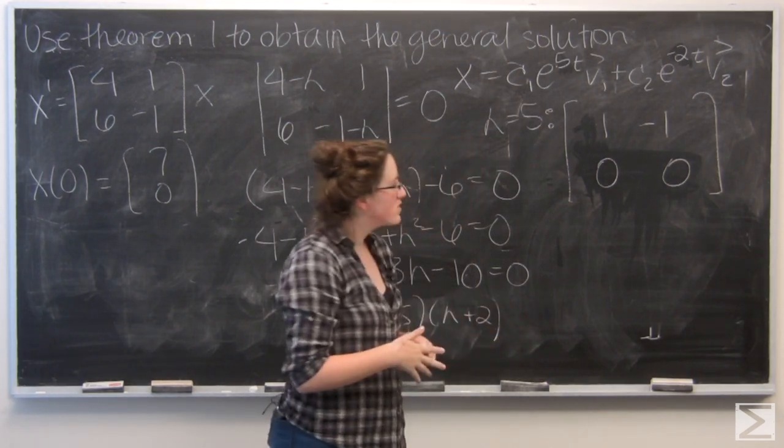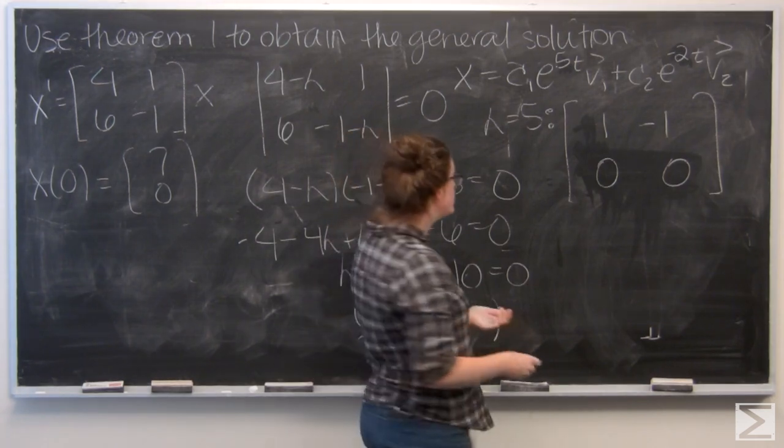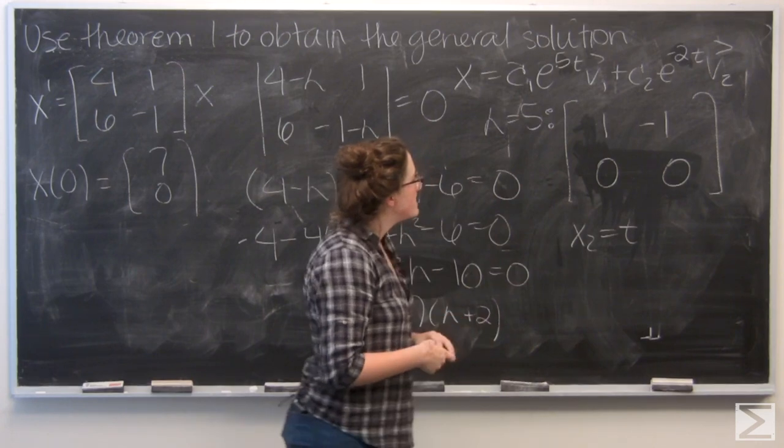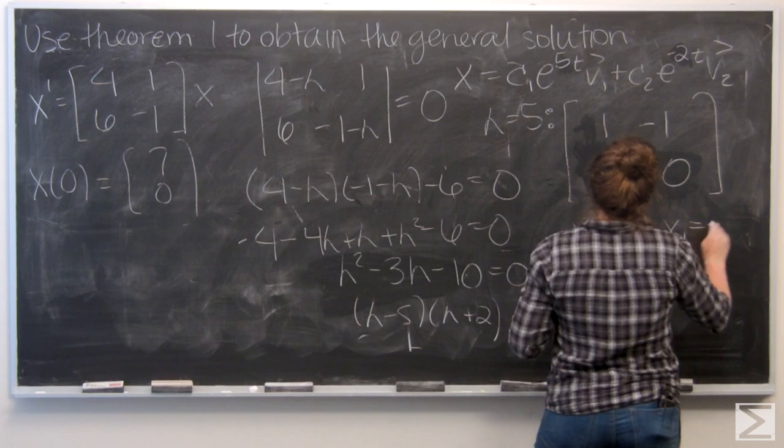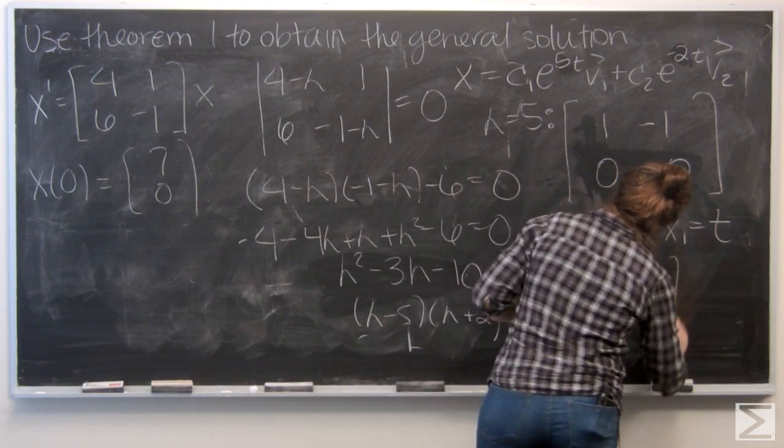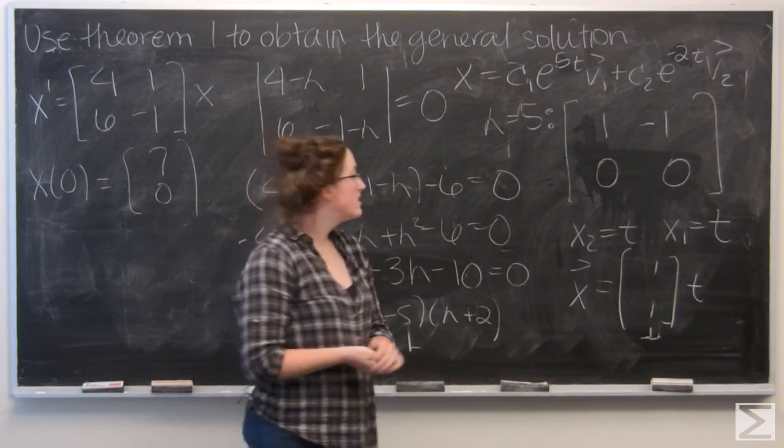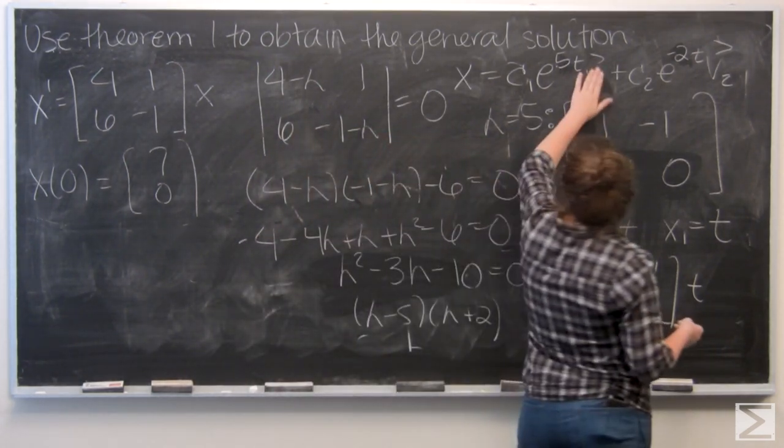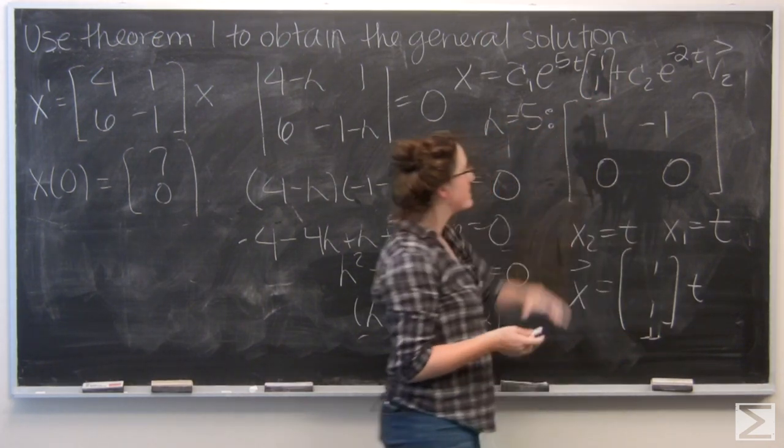So I have the matrix 1, negative 1, 0, 0. I know my second component x2 is going to be a free variable. I'm going to call it t. And I can back substitute x1 minus t equals 0. That means x1 is also equal to t. And I can write that as the vector solution, vector 1, 1 times t. That vector 1, 1 is going to be my v1, the associated eigenvector. So I'm going to go ahead and put that up there.